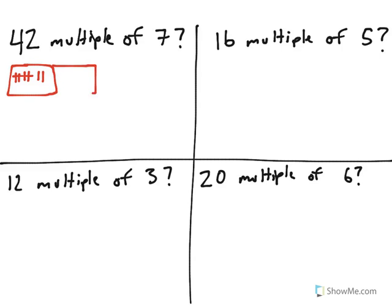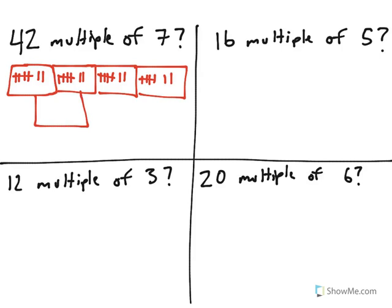one group is equal to 7. If I continue adding, two groups is 14, three groups is 21, four groups is 28, five groups is 35, six groups is 42.